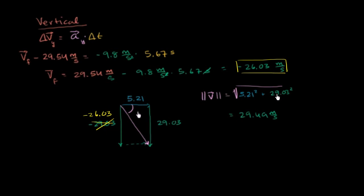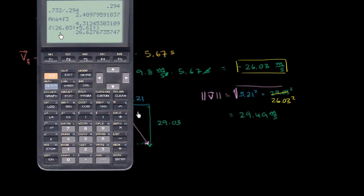So the total velocity, we should have 26.03 squared over here. And then if we evaluate that, and I just did it on my calculator, 26.03 squared plus 5.61.